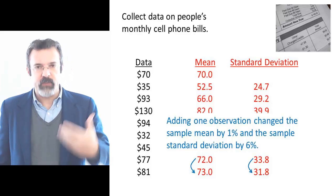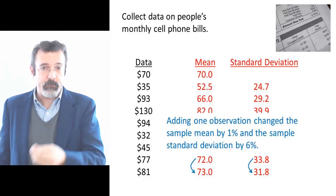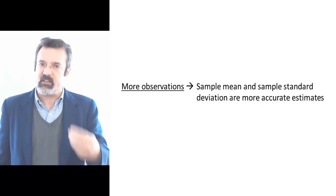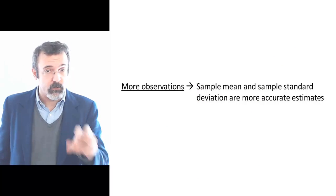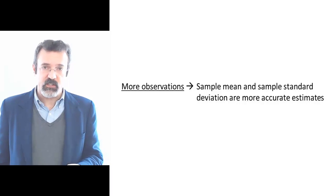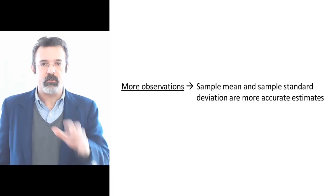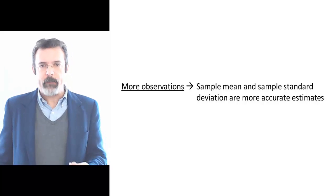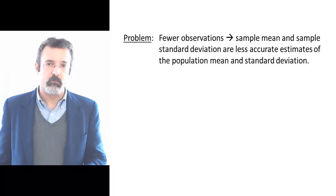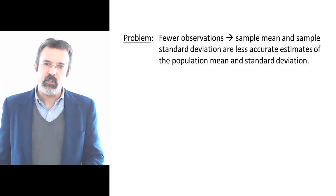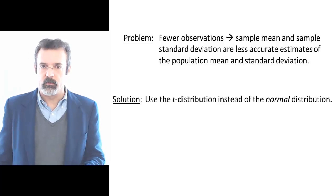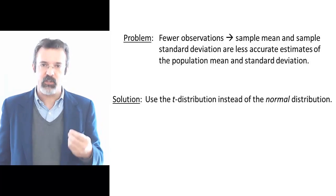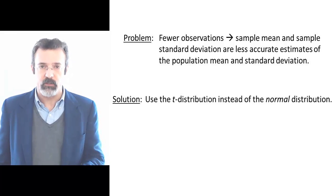The more observations we have, the less sensitive the sample mean and the sample standard deviation are to changes in the number of observations. As the number of observations increases, our sample mean and sample standard deviation become more accurate estimates of the population mean and the population standard deviation. The more accurate these estimates are, the better able we are to fit the appropriate normal distribution to our data. If we are stuck with a small number of observations, the solution is to use the T distribution instead of the normal distribution.